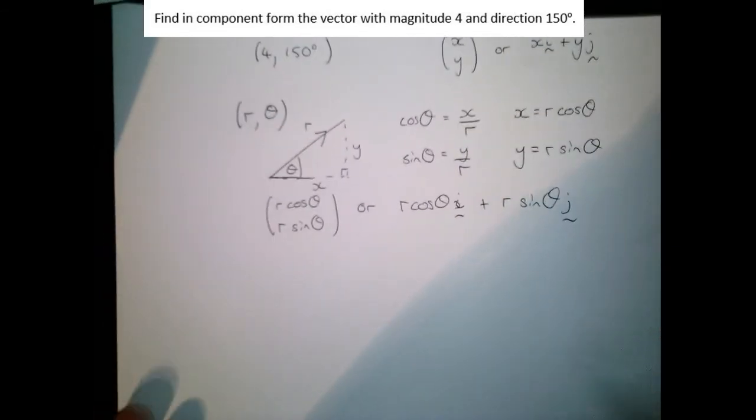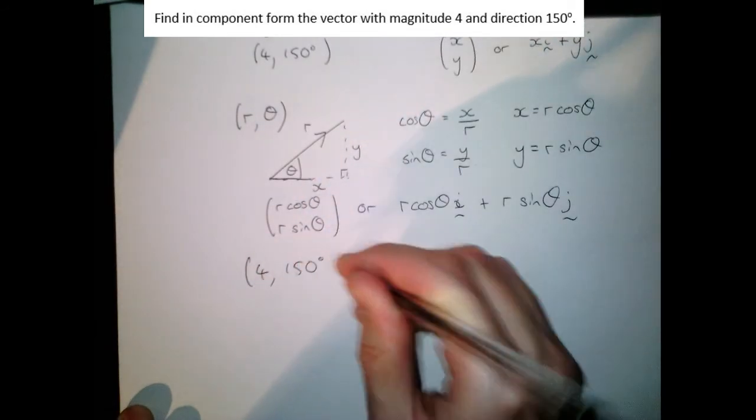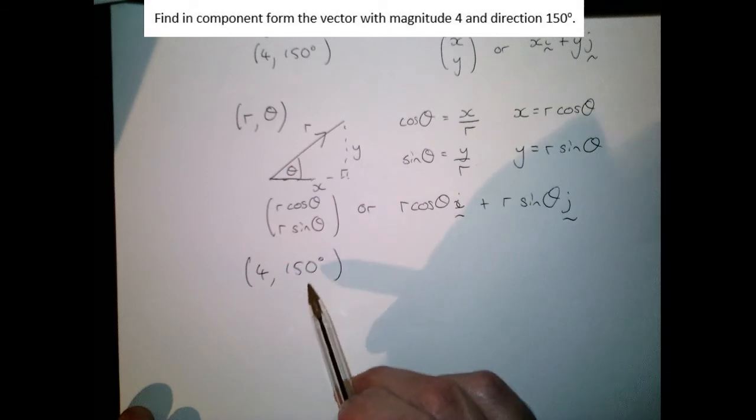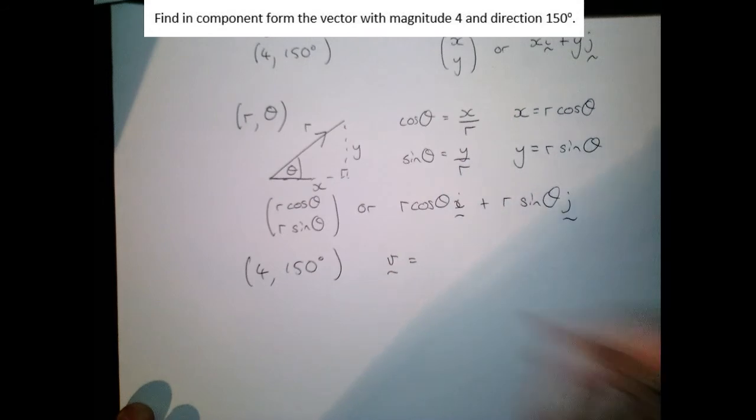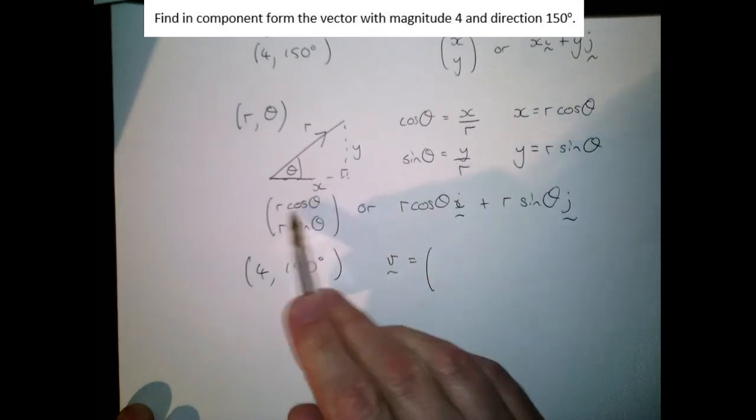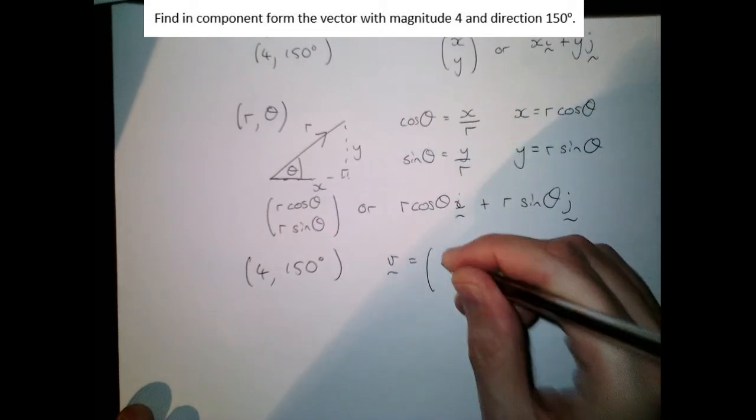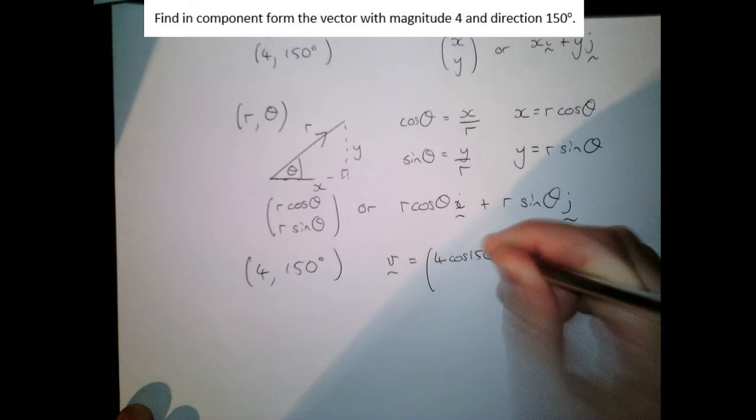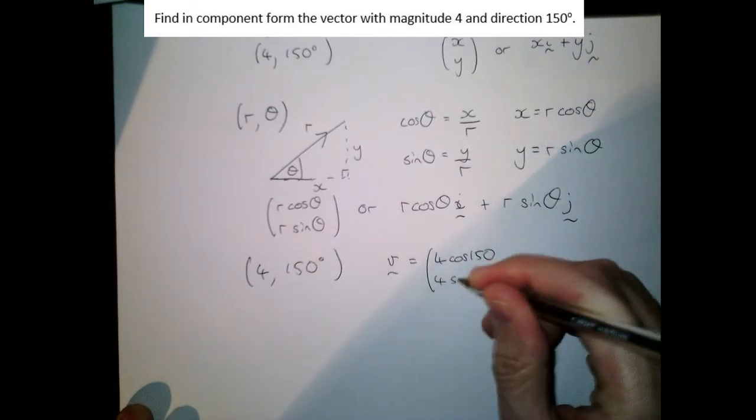Let's go back to our example which was 4, 150. We're saying here that r is 4 and theta is 150, so let's turn that into a vector. The vector in component form, the i component is r cos theta, that's 4 cos 150, and the j component is r sine theta, that's 4 sine 150.